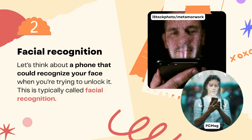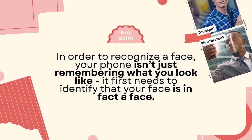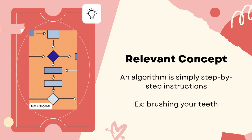Let's think about a phone that could recognize your face when you're trying to unlock it — this is typically called facial recognition. But in order to recognize a face, your phone isn't just remembering what you look like. It first needs to identify that your face is in fact a face. That sounds simple, right? Actually, not really. It very much depends on how the algorithm that determines if something is a face was created. An algorithm is simply a step-by-step set of instructions, and if it's looking for certain features when evaluating whether something is a face or not, that can quickly become pretty problematic.